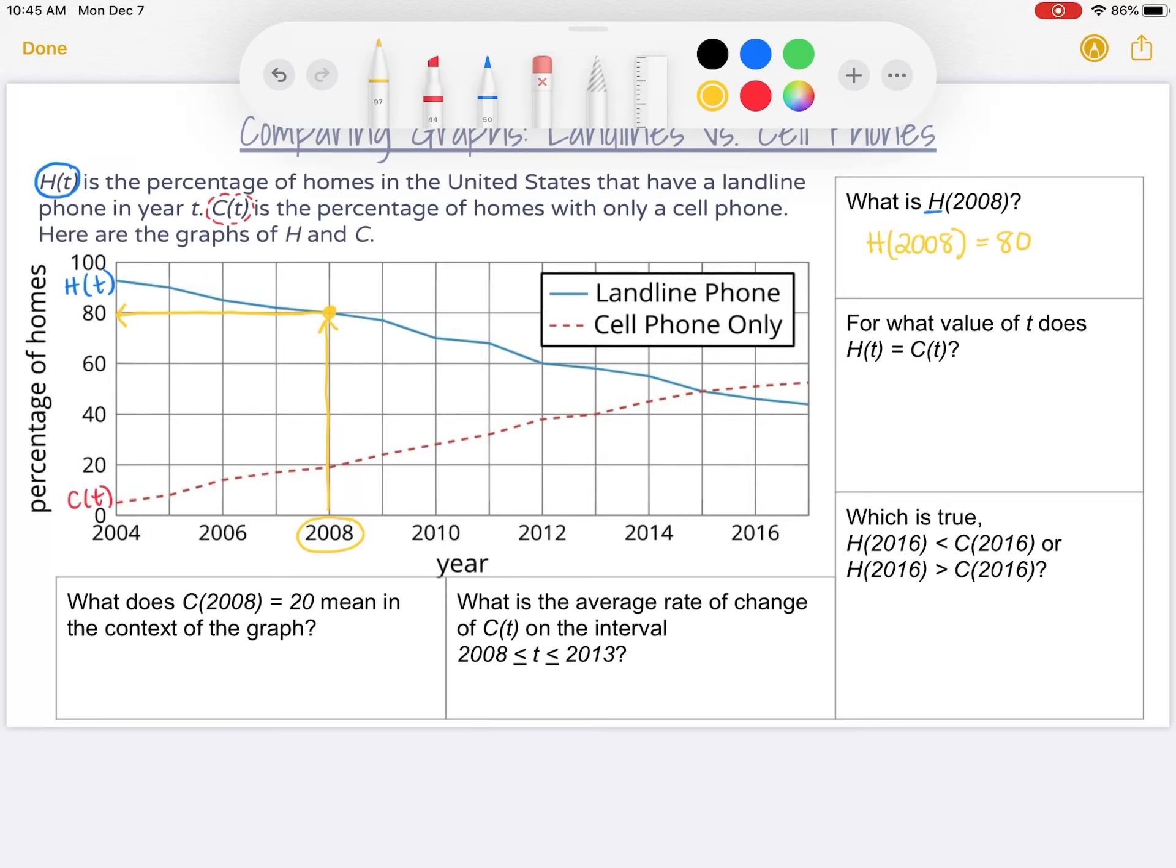So now that we've practiced reading our graph, the next question asks for what value of t does H(t) equal C(t)? So this means I'm looking for where on my graph my two lines have the same y-value. In other words, I need to look for where my graphs are intersecting with each other. So I need to look where is the blue line and the red dotted line crossing and touching each other. And I can see that that's happening right here.